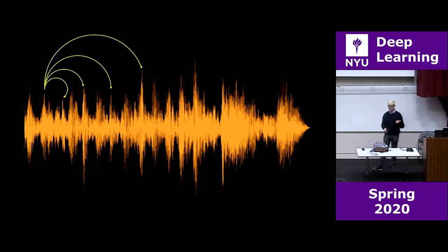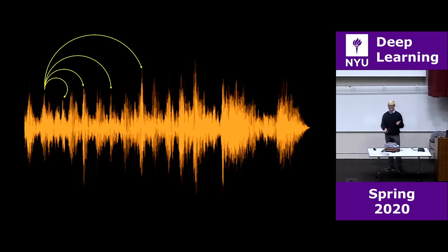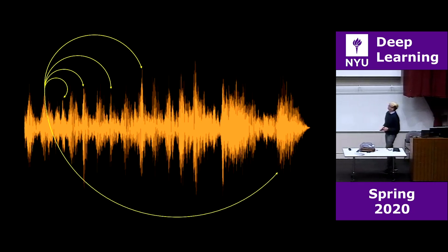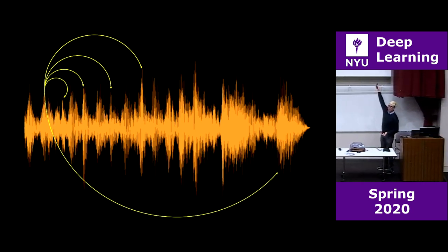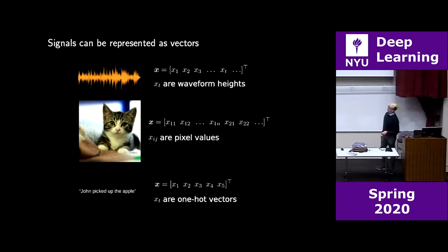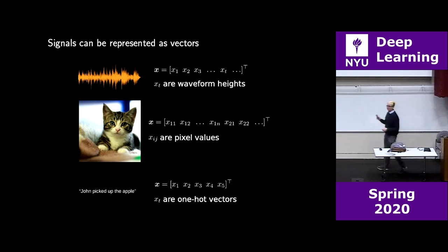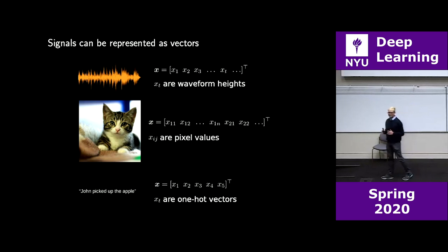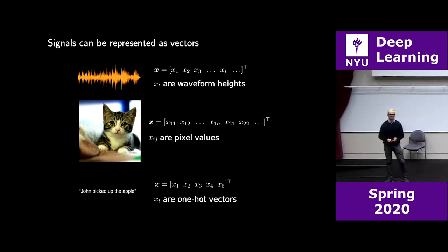So we have stationarity and locality. Now let's look at a nice little kitten. What dimension does this signal have — what's your guess?